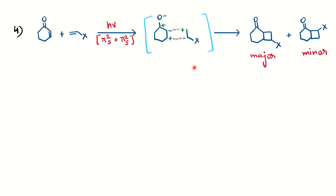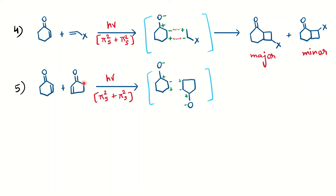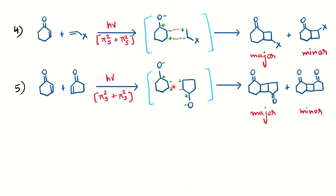Two alpha-beta unsaturated compounds under photochemical conditions: free radical formation gives a 2+2 cycloaddition product. Again, whether the two carbonyls are on the same side or opposite — use the same trick. Oxygen bears a negative charge, so the carbon is positive; write minus-plus the same way. Minus-plus makes a good bond, so the two carbonyls should be opposite to each other — that is the major product. The other arrangement is minor.